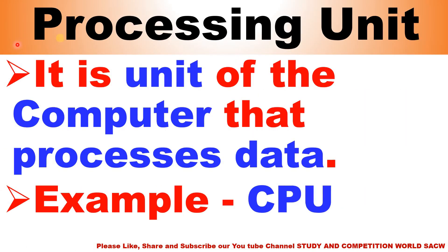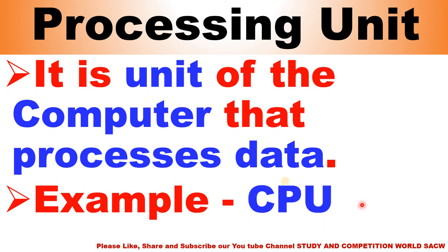What is a processing unit? It is the unit of a computer that processes data. The example is CPU — central processing unit. All processing is done in the CPU. It is the brain of the computer and the most important part of the computer.